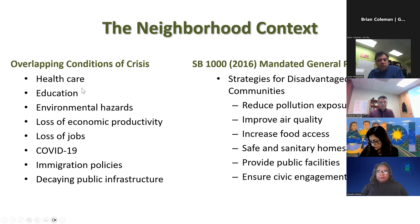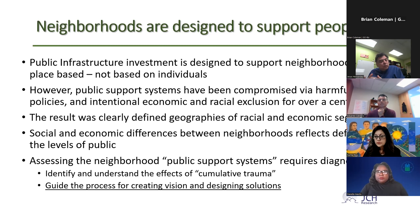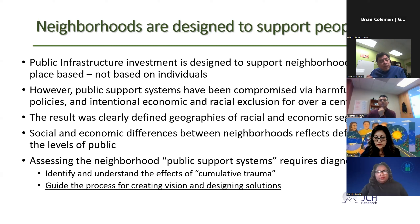The neighborhood is the unit of analysis because public infrastructure investment is designed to support a place, not individuals. However, this public support system has been compromised by over 100 years of racialized policies and economic exclusion, resulting in clear patterns of racial and economic segregation visible in any major California city. Economic differences between neighborhoods reflect differences in public investment levels. The goal is to assess neighborhoods and their support systems to understand this cumulative trauma and guide vision and design solutions.